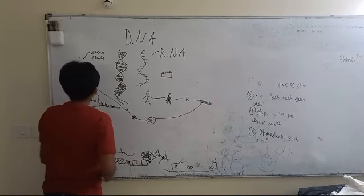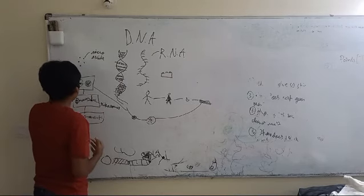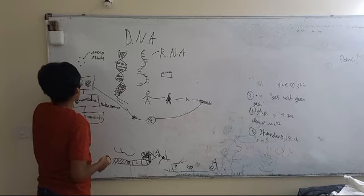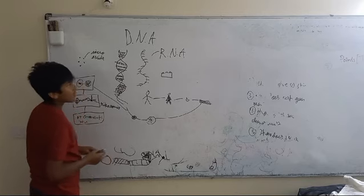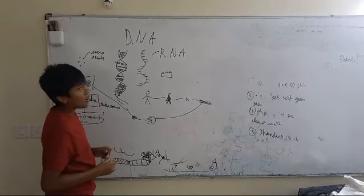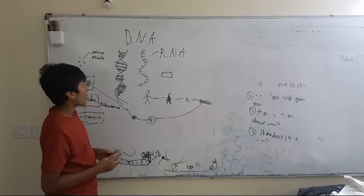So it works like this. In order to create proteins, the DNA inside the nucleus has to get to the amino acids. So it creates a genetic copy of itself and creates RNA—ribonucleic acid.